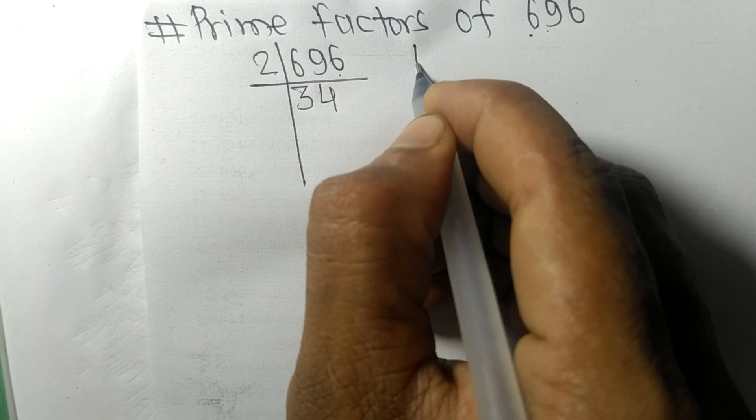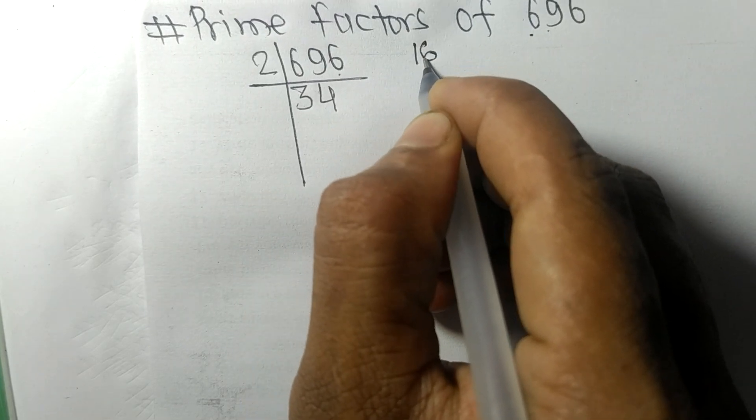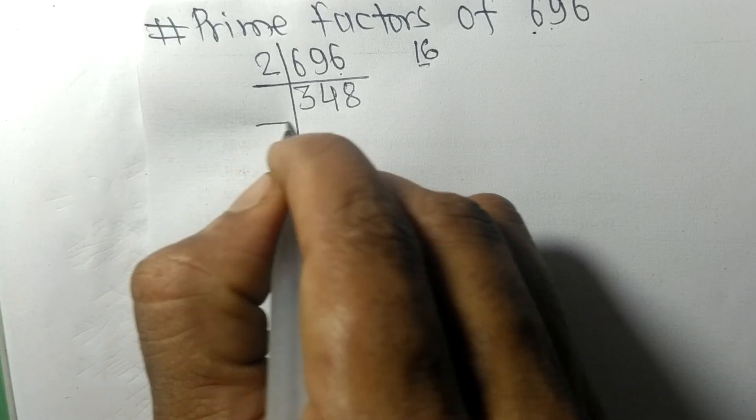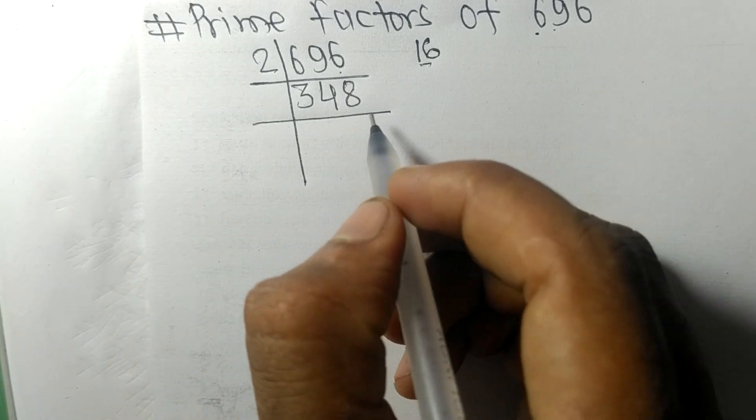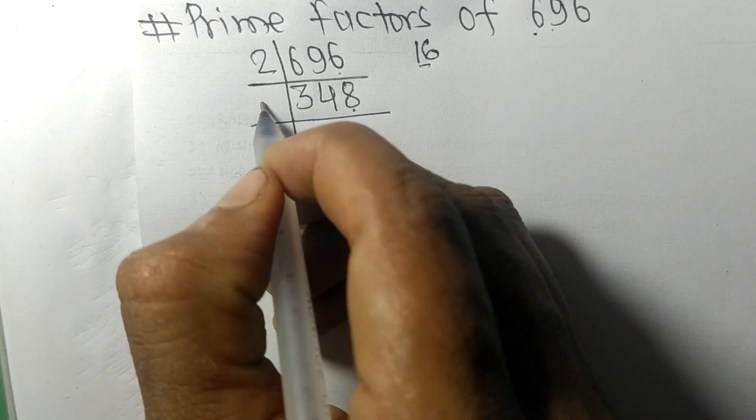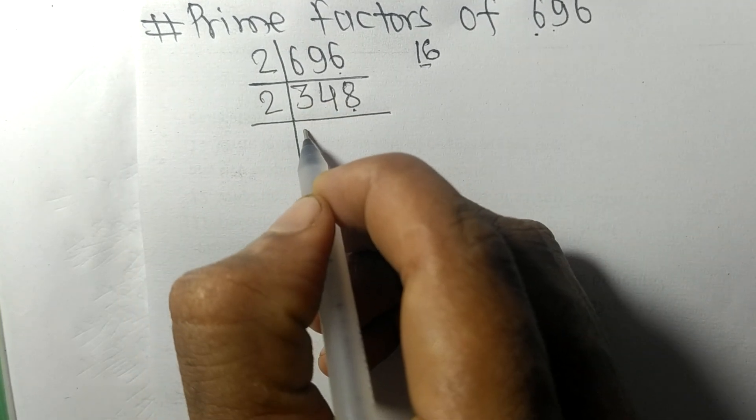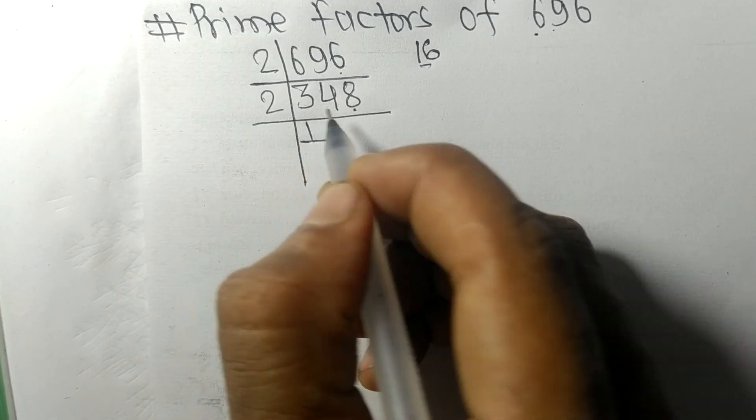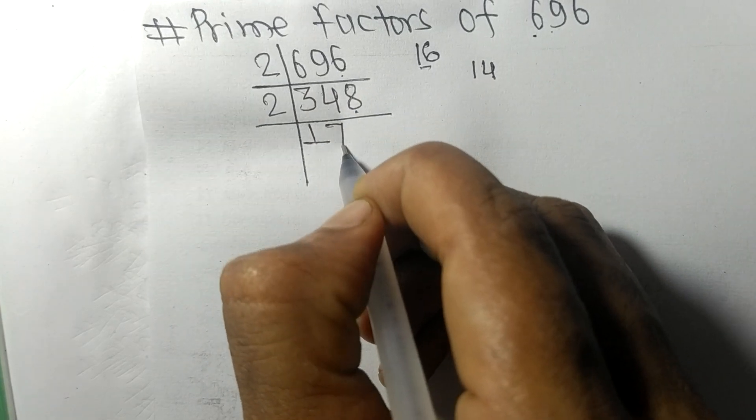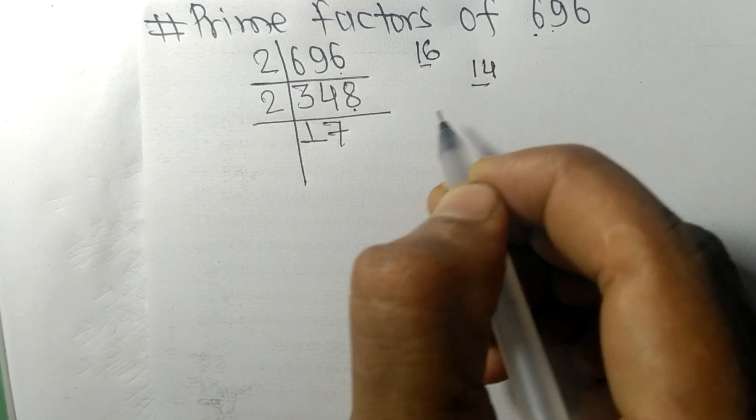Again we have an even number 8 at last, so it is divisible by 2. 2 times 1 equals 2 remainder 1 and 4, 14, 2 times 7 equals 14, and 2 times 4 equals 8.